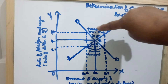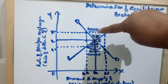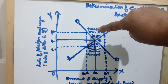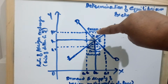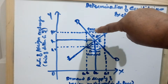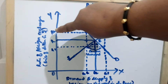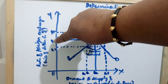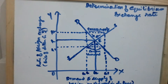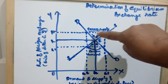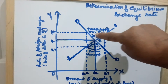So what happens in this situation? The exchange rate should fall back to OR again to reach the equilibrium level. So this is the excess supply situation.